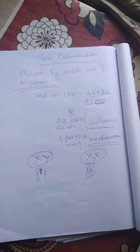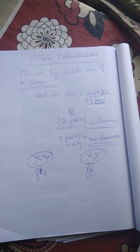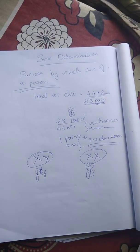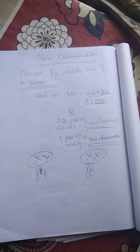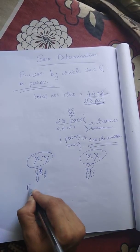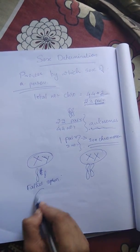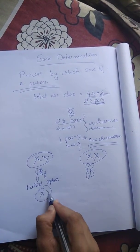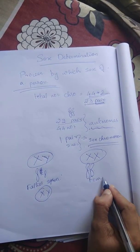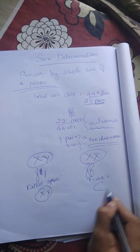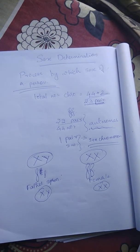Male or female — how to determine that? The father's original sex chromosomes are X and Y. Females have sex chromosomes that are always X and X.